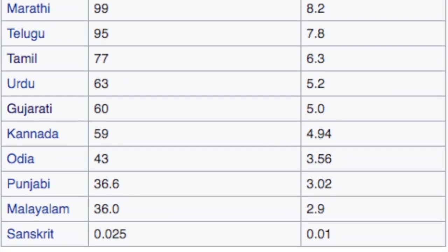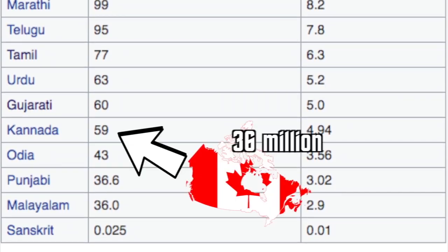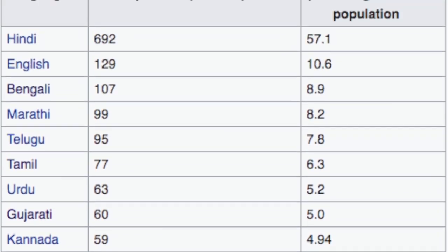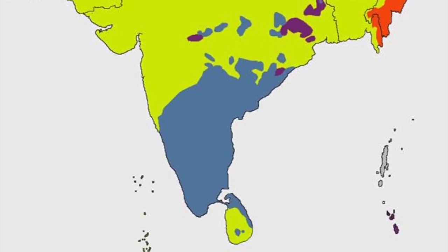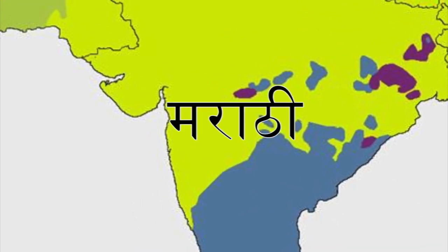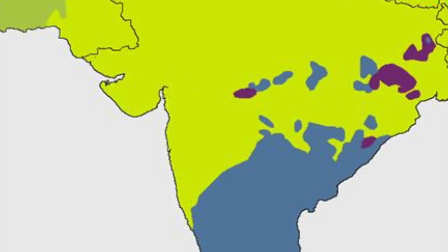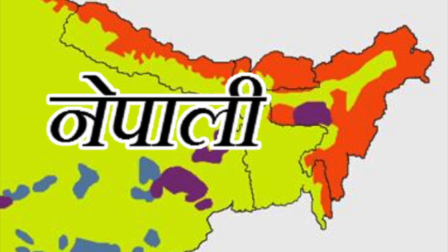As you can see here, it's pretty interesting to note that there are more people who speak Kannada than live in Canada. Hindi is by far the most commonly spoken language in India, but this isn't necessarily the case everywhere. In the south, people generally tend to speak languages like Tamil, Telugu, and Kannada, whereas in the west it's very often Marathi and Gujarati. Let's also not forget the seven sister states of northeast India, who speak languages like Assamese, Bengali, Bodo, and Nepali.